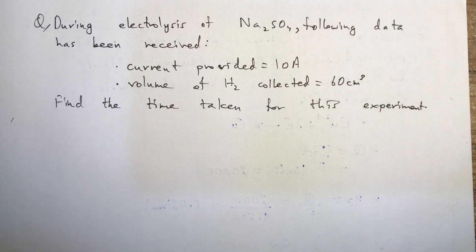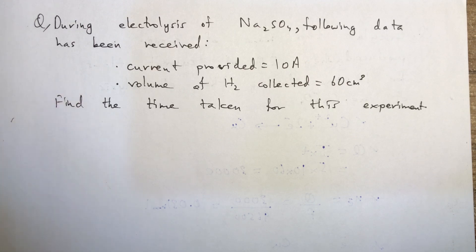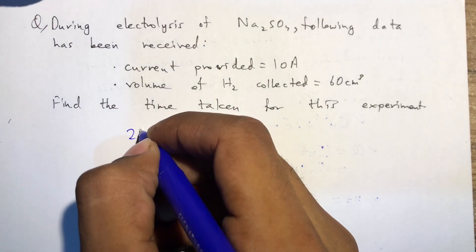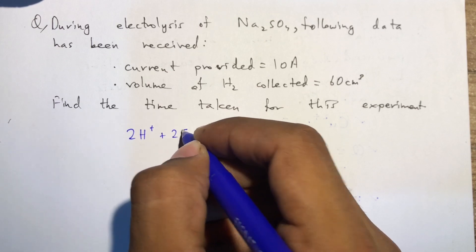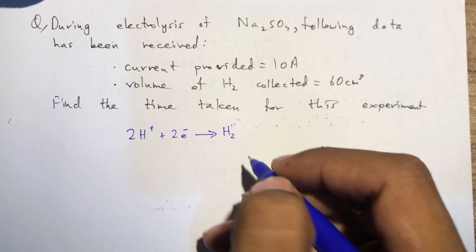Next question: during electrolysis of sodium sulfate, a current of 10 amperes was provided and the volume of hydrogen collected was 60 cm³. Find the time taken. This is a reverse question where time is not given but volume of hydrogen is given. Hydrogen is collected at the cathode as H⁺ is a positive ion. The cathodic equation is: 2H⁺ + 2e⁻ → H₂.